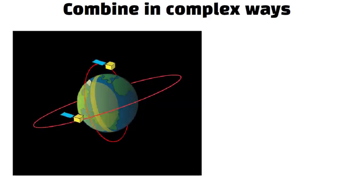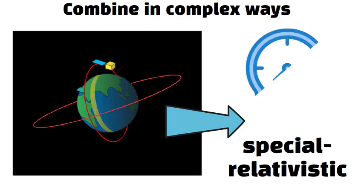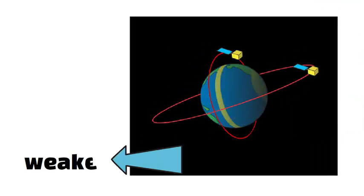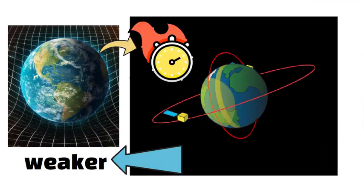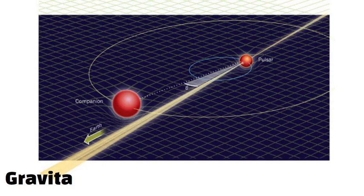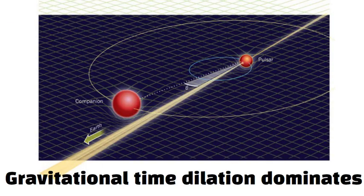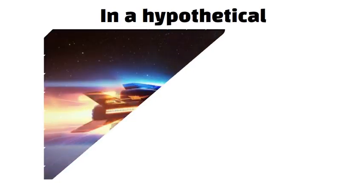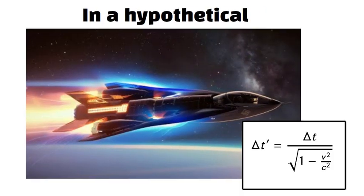Satellites in orbit move fast, causing special relativistic slowing, but they also experience weaker gravity, which speeds their clocks up. Near a neutron star, gravitational time dilation dominates. In a hypothetical near light speed spacecraft, velocity time dilation rules.